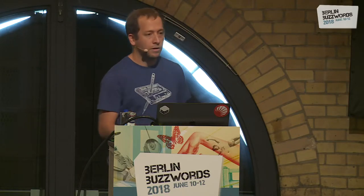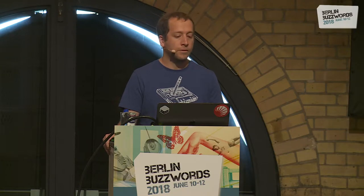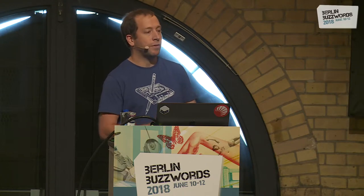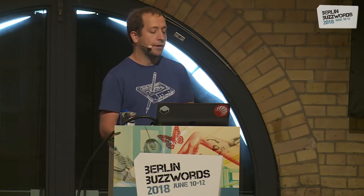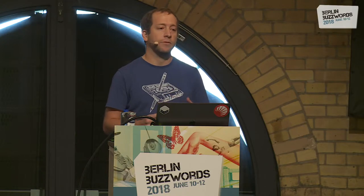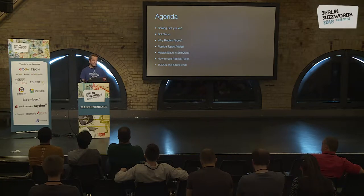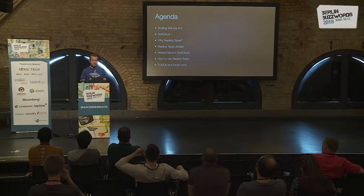This is the agenda for my talk. First, for context and history, we're going to start talking about scaling in Solr — how it was before SolrCloud, how it is in SolrCloud, why and what things we're trying to address with replica types, then which replica types were added, then one of the use cases you can achieve with replica types — which is having a master-slave architecture in SolrCloud — then how to use them, and some future work or things that need to be done.